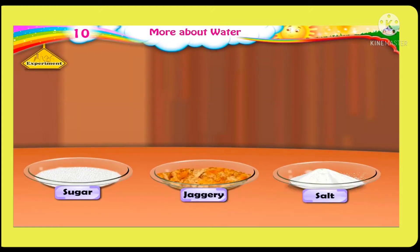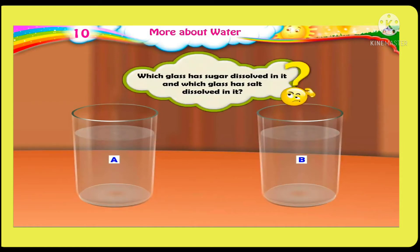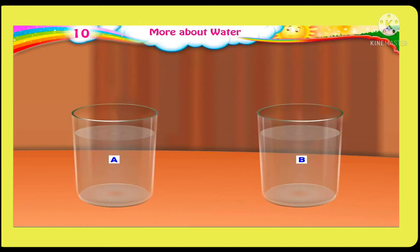So students, like sugar, jaggery and salt also dissolve in water. Now here is a question for you all. Suppose two glasses like A and B filled with water are placed in front of you. How can you tell which glass has sugar dissolved in it and which glass has salt dissolved in it? You cannot tell the difference unless you taste the water.